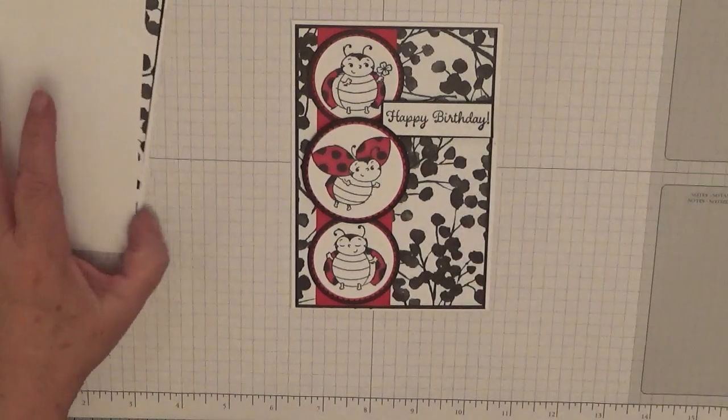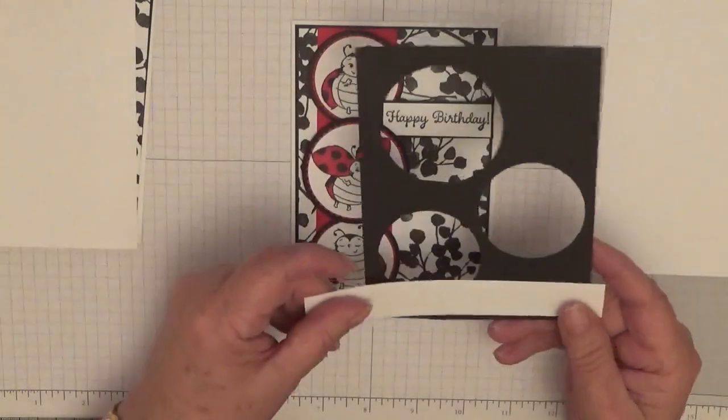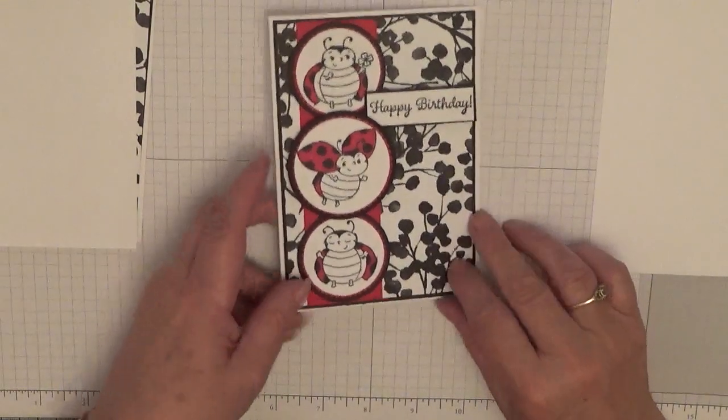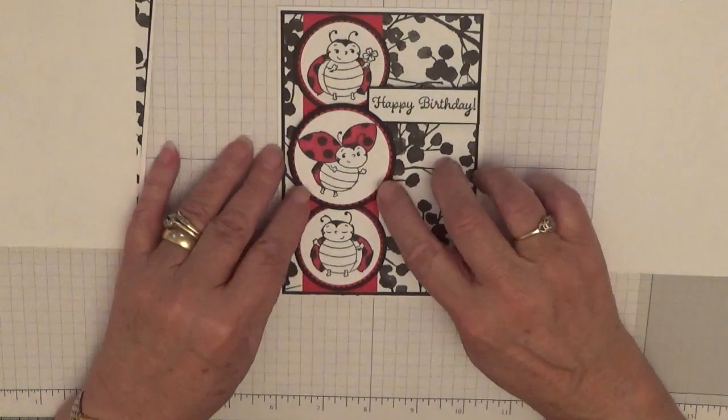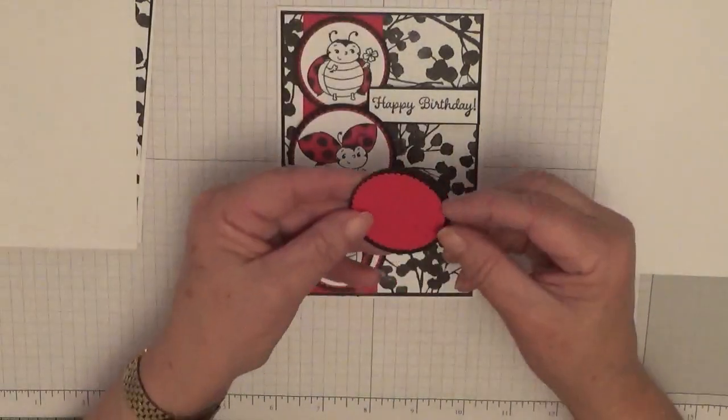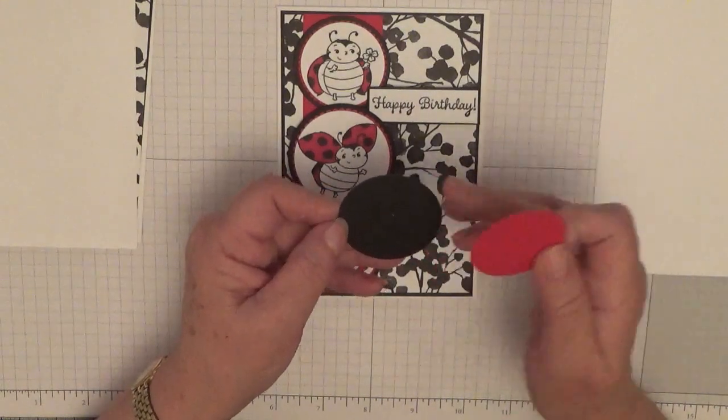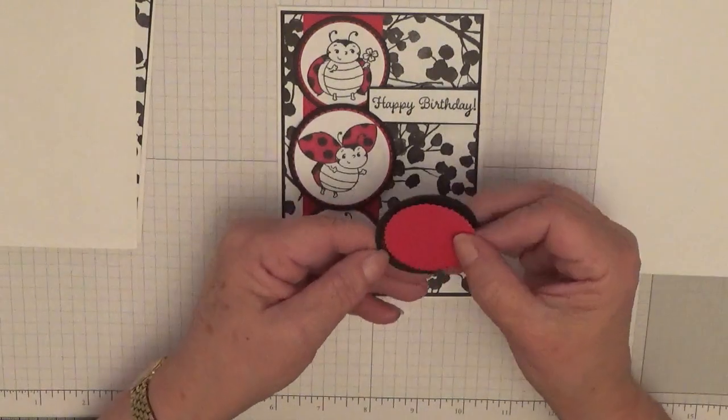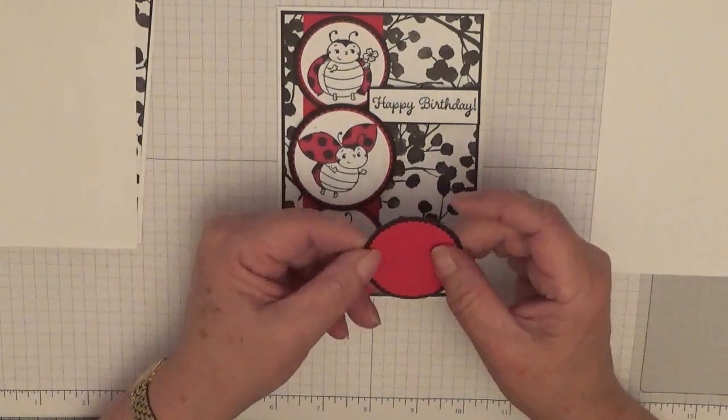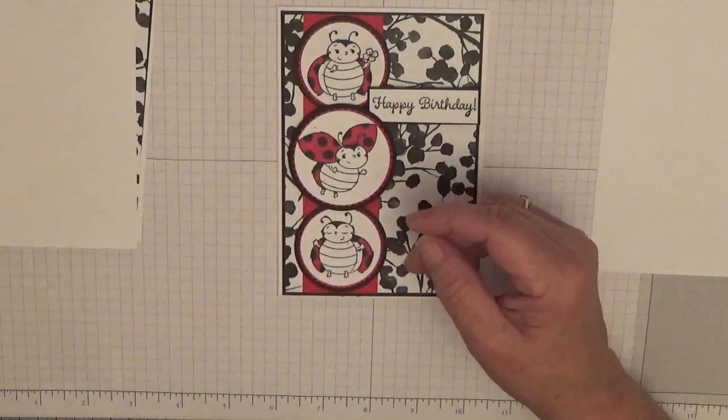So we need a scrap piece of card. I've also got a scrap black and a scrap white for the sentiment. You also need scraps of red and black for the scalloped circles. And I've got a scalloped circle in red and a plain circle in black. And obviously these ladybugs will be cut out in white, which I've already done, but I will stamp them and use them again another time.